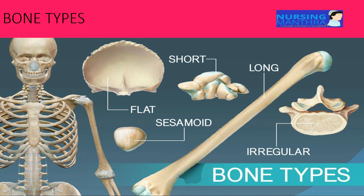There are mainly four types of bone classified according to their shape. First is flat bone - example: ribs. Irregular bone - example: vertebra. Short bone - example: carpals. Long bone - examples: humerus and femur.